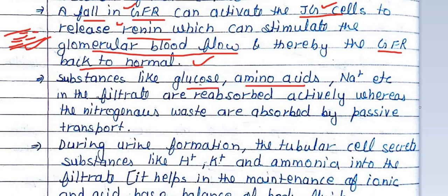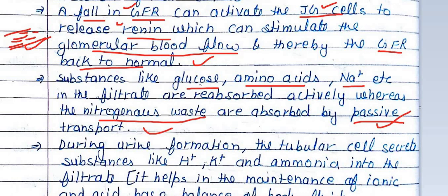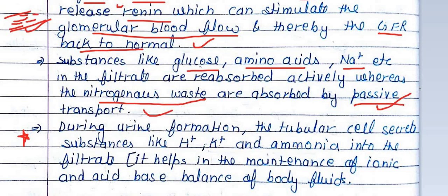Substances like glucose, amino acids, and sodium in the filtrate are reabsorbed actively, whereas nitrogenous waste is absorbed by passive transport — which does not require ATP. One important thing is that during urine formation, the tubular cells secrete substances like H+, K+, and ammonia. These three things can be released to create acid-base balance and maintain ionic balance in the blood.